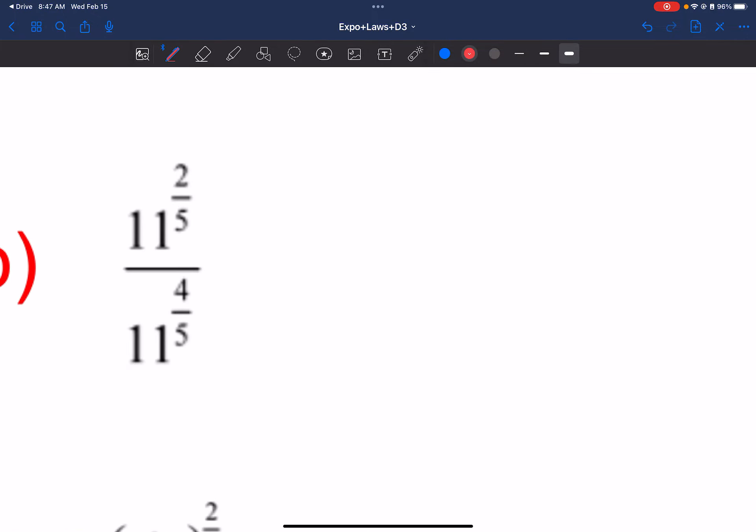So what we can do is we can turn that 3 over 2 into 6 over 4. And now what I can do is I can add my exponents. So I can do 6 over 4 and 1 4th, and that adds up to 7 over 4. Okay, the next one, these are dividing, so I can subtract the exponents. So 2 5ths minus 4 5ths, that would be negative 2 5ths.